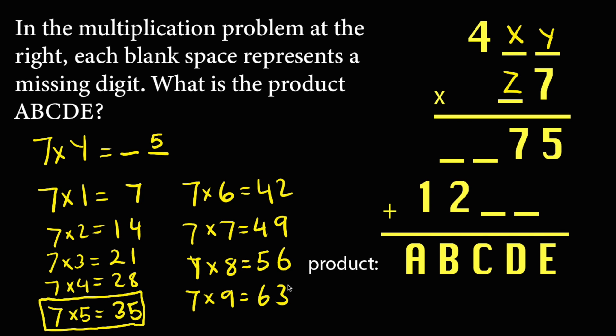As we see, there is only one possibility for y to be equal to five. Therefore we will have five in the place of y here in the ones digit. Five times seven is 35, and we will have three carried over. This time, five times x plus three will generate seven.